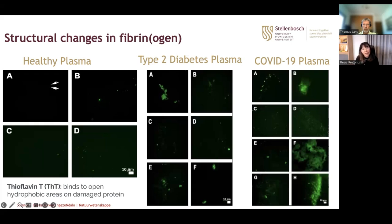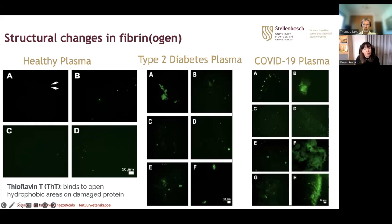In healthy individuals you find a little microclot formation — not very much, and never zero, because all of us have some protein misfolding. We also find clotting and misfolding of clotting protein in type 2 diabetes plasma, in rheumatoid arthritis, and in cardiovascular disease. We accept that microclot formation occurs in other diseases as well, because many of these conditions also have underlying clotting pathology.